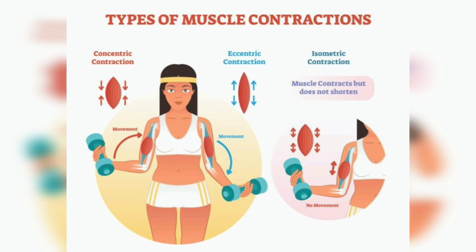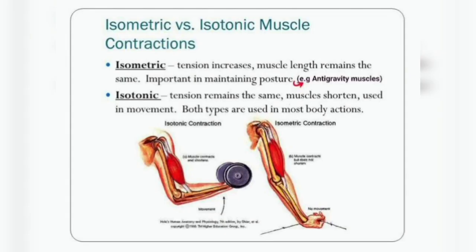The third type is isometric contraction. Here the muscle contraction takes place while holding the dumbbell — she is not lifting it, not lowering it, just stationarily holding the dumbbell in a particular position. Even without any movement, the muscle is still contracting. Just imagine holding dumbbells stationary without any movement — the muscle will contract. This is called isometric contraction.